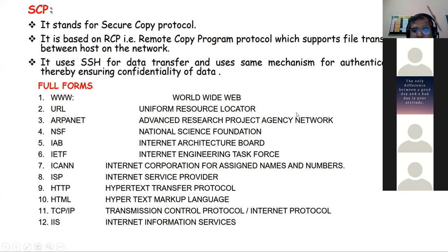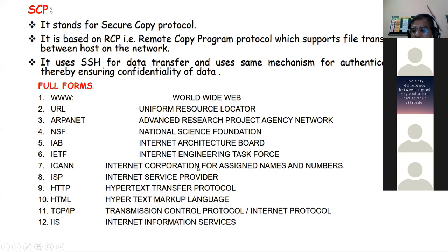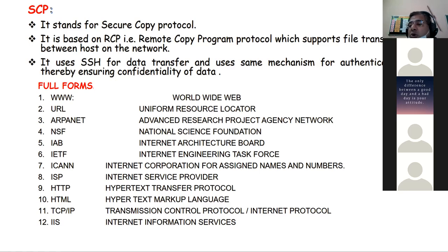Here are some important full forms: IAB - Internet Architecture Board, IETF - Internet Engineering Task Force, ICANN - Internet Corporation for Assigned Names and Numbers, ISP - Internet Service Provider, TCP/IP - Transmission Control Protocol / Internet Protocol. TCP/IP is a very important protocol of the Internet, so be attentive.